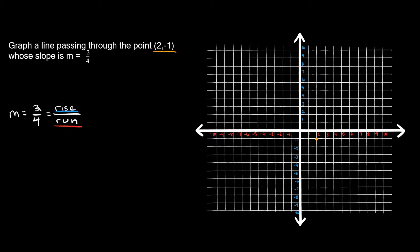Here the rise is positive 3 and the run is positive 4, so we're going to go over to the right 4 spaces. Going back to the point we were given, all you have to do is go up 3 spaces and then go over to the right 4 spaces. So now we've found another point on our line.